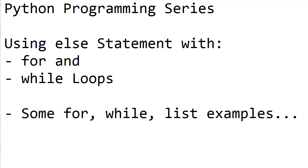If the else statement is used in a for loop, the else block of code only gets executed if your loop terminates normally. When I say normally, that means your loop has not encountered any break statement during the execution of the program. So in that case, your loop terminates successfully and the else block code gets executed. While in the case of else with the while loop, the else statement gets executed only when the condition becomes false. In that case, the else block of code is going to get executed. These are things to keep in mind when working with the else keyword with our for and while loops.